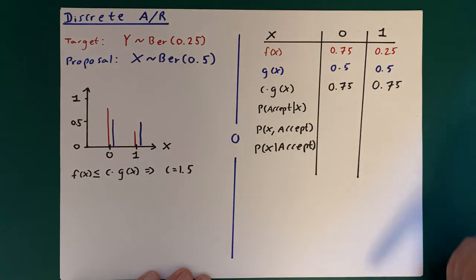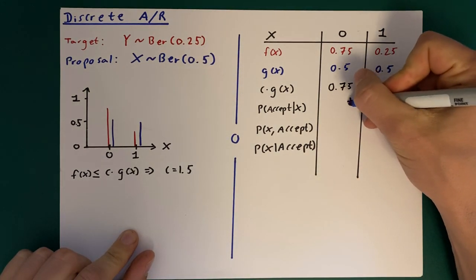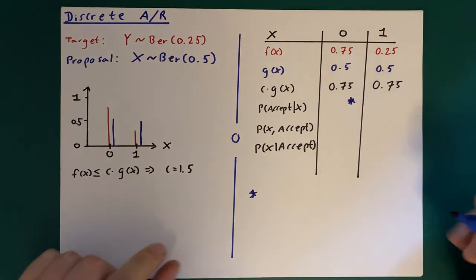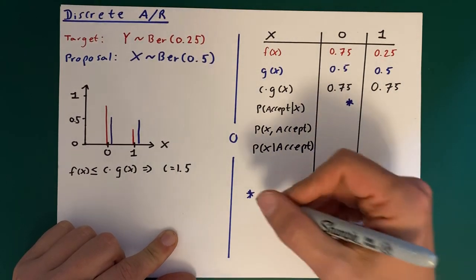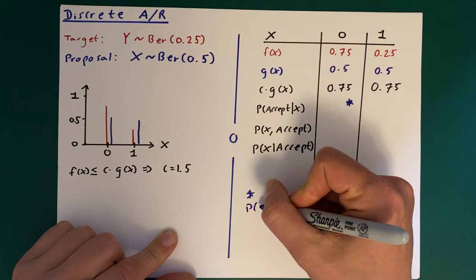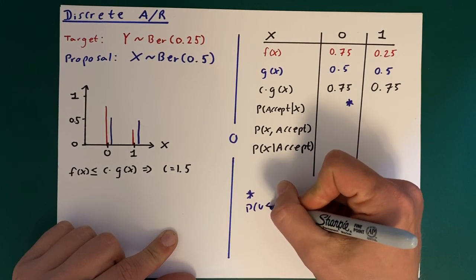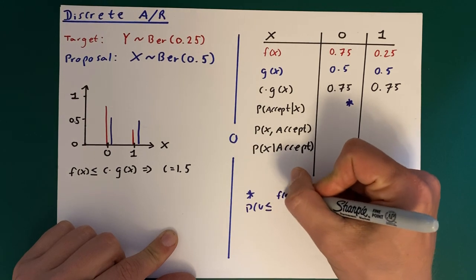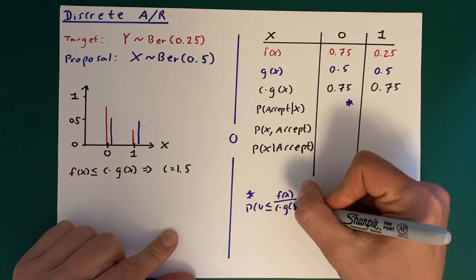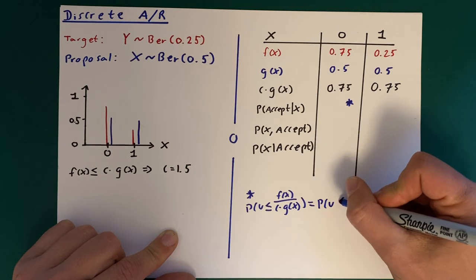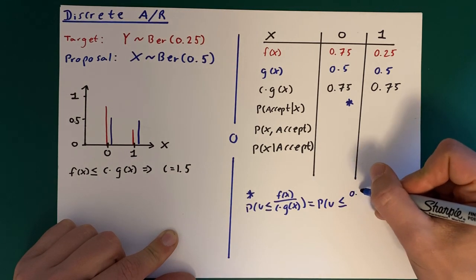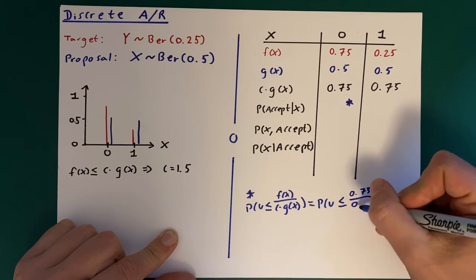Then we get to these conditional probabilities here. So for the first probability, I'll just add a small star here and I'll do it down here. This is the probability of accepting conditional on x being 0. So we see that's the probability of u being less than or equal to f(x) over c times g(x). That's equal to the probability of u being less than or equal to 0.75 over 0.75.